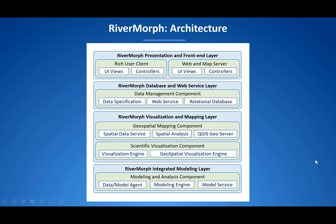To accomplish these functionalities, we need a robust cyber infrastructure to support RiverMorph. This slide shows the basic architecture for RiverMorph that includes five layers. The front layer will allow user interaction through query and mapping interfaces. The database and web service layer will support data storage and interaction with external resources. The visualization and mapping layer will allow spatial analysis and visualization of RiverMorph data. The modeling layer will support data-driven analysis and modeling.